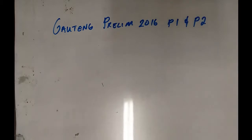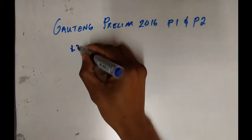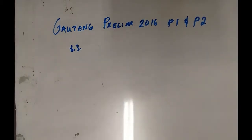Today we'll be doing subsection 8.3 in the Gauteng Prelim 2016 Paper One. The question says to calculate the x-coordinates of the points